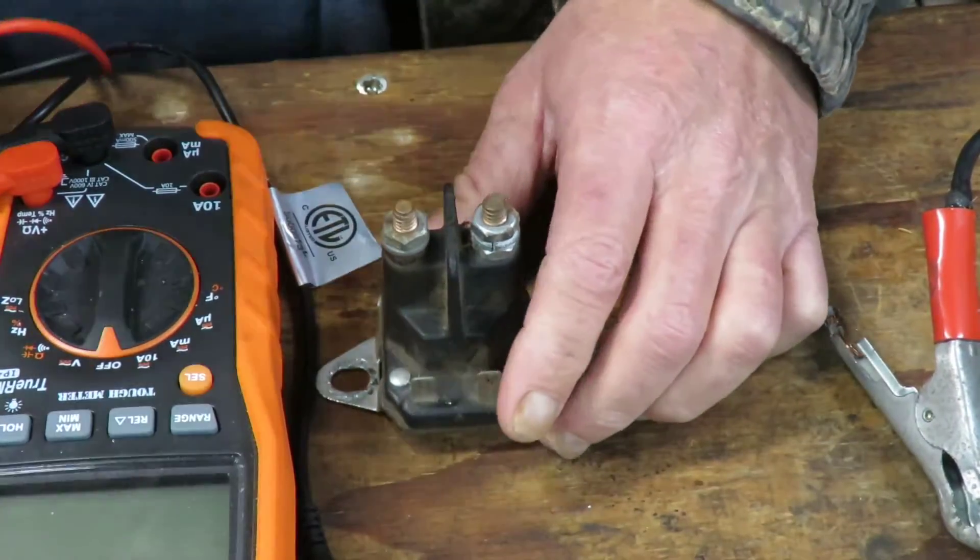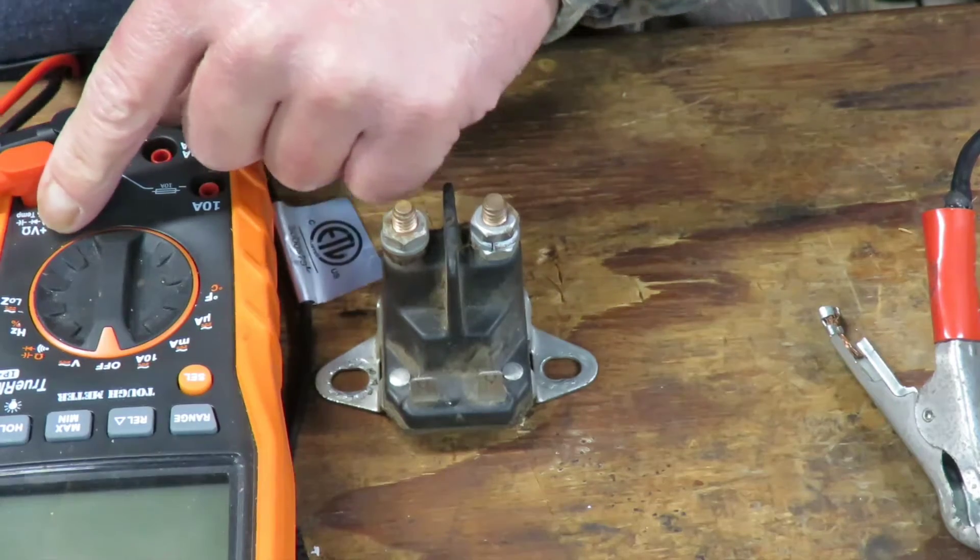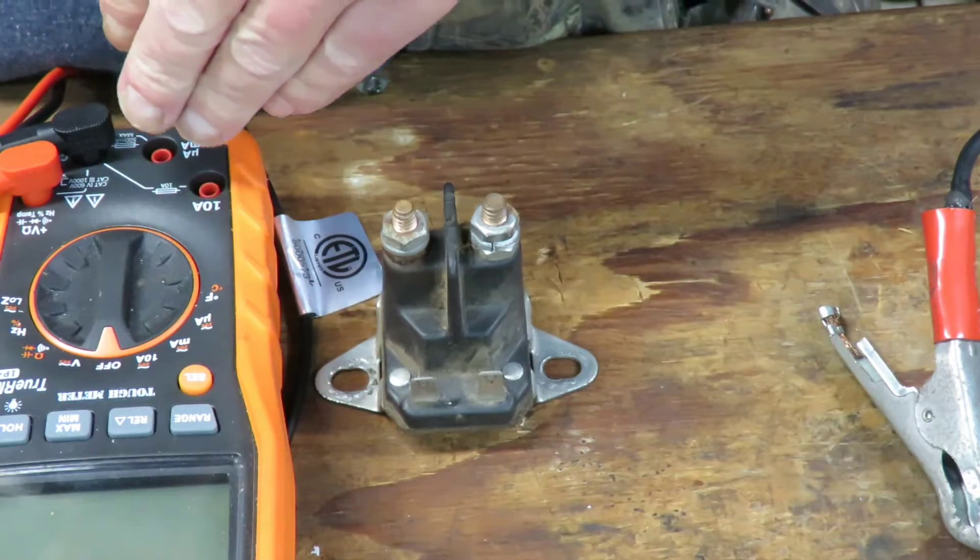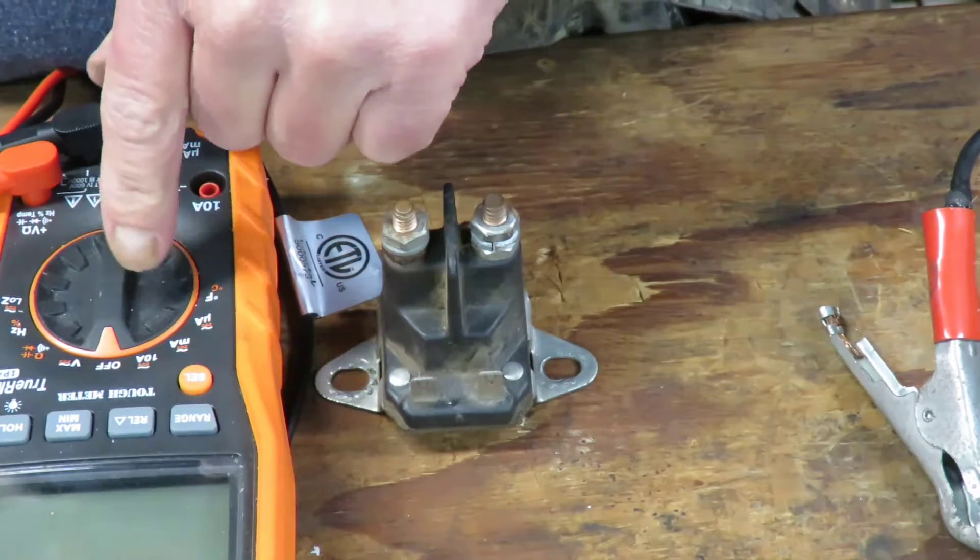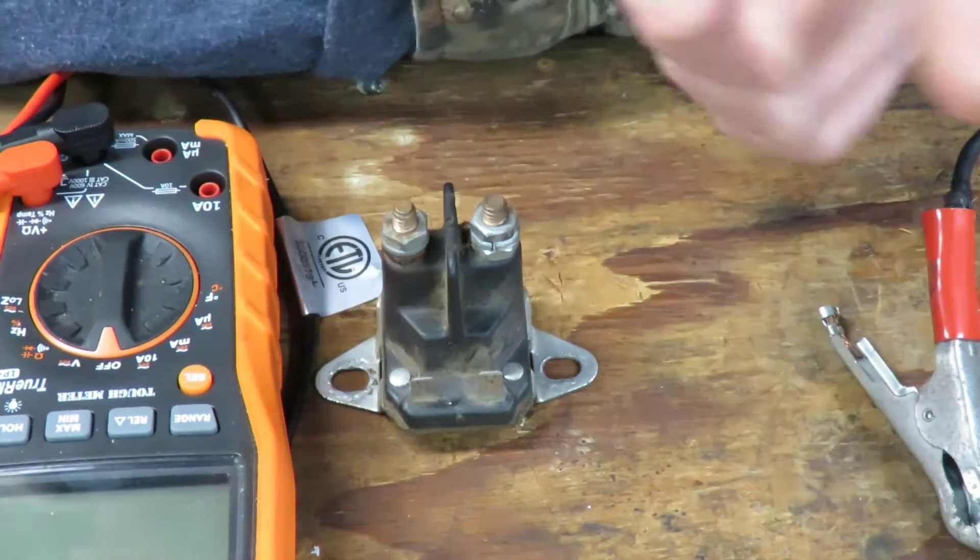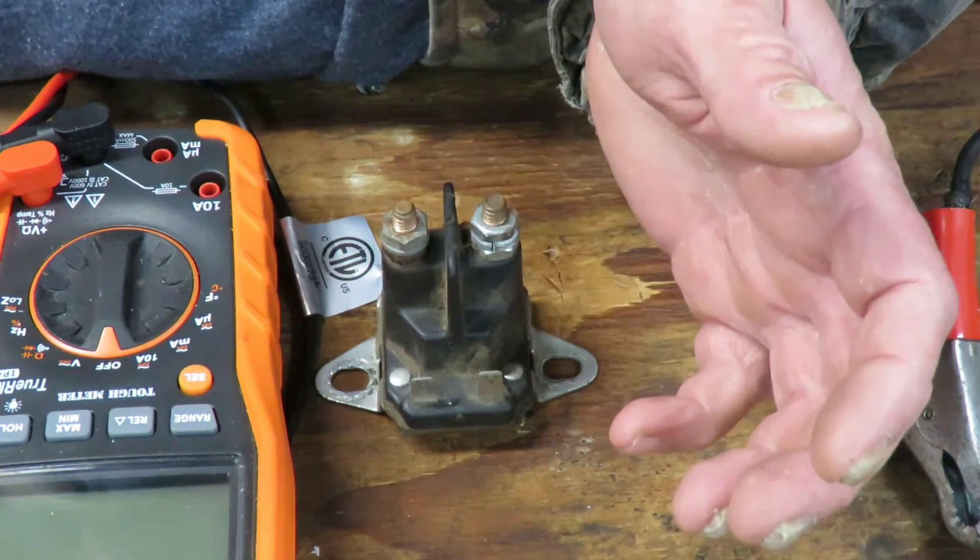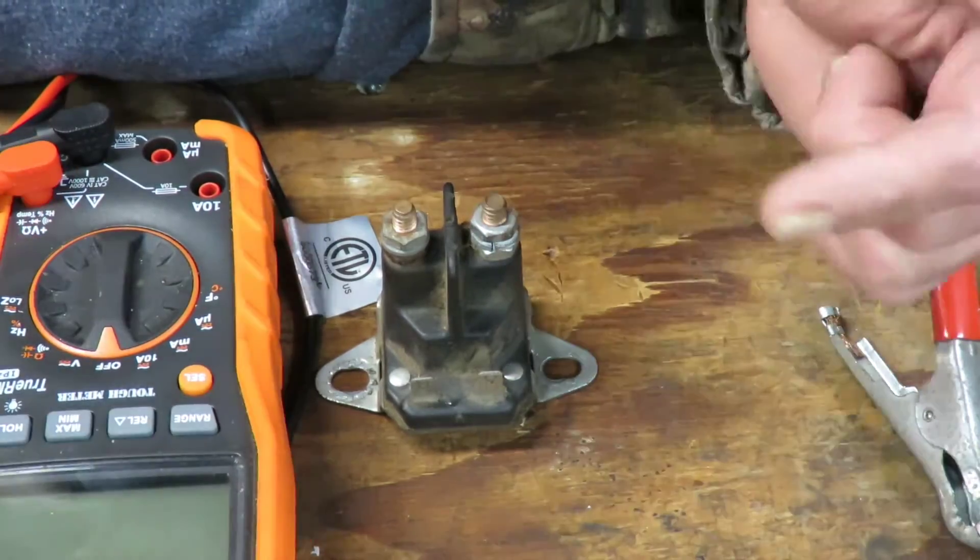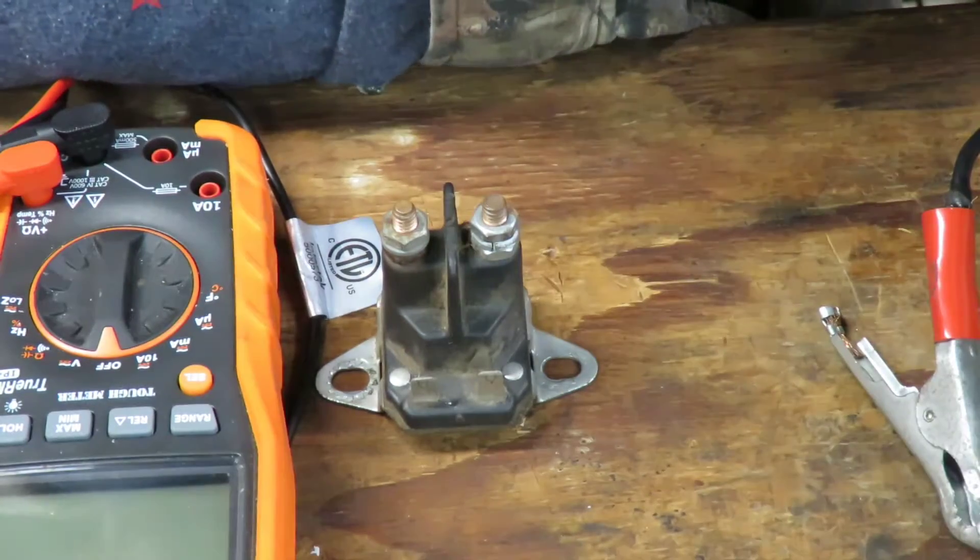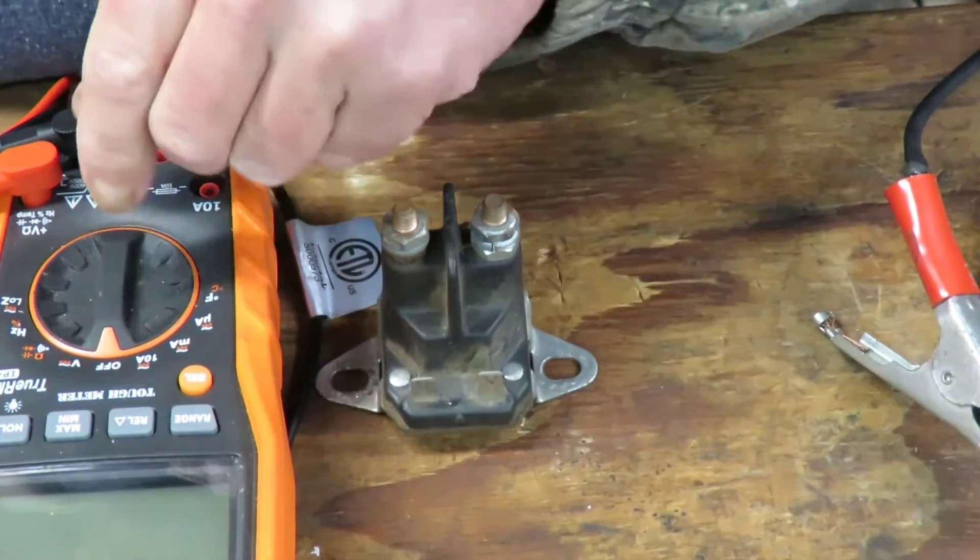So now what you're gonna do, you got your meter, you're gonna put it on ohms, which is resistance. For people that don't know a meter, when you put it on ohms you're pretty much checking a connection between something. It's the resistance between it, but it's a connection between it. Could be a switch, it could be one end of a wire to the other end of the wire. You're checking to make sure there's no break in that wire.